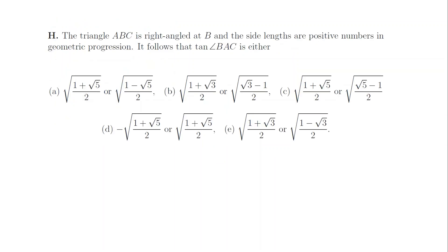1h. Call the sides a, ar, and ar squared. Pythagoras gives 1 plus r squared equals r to the 4. Solve this quadratic for r squared to find r is the square root of (1 plus root 5) over 2. Now tan of the angle might be r, or it might be 1 over r, depending on which corner is chosen. Some algebra gives the answer to be c.